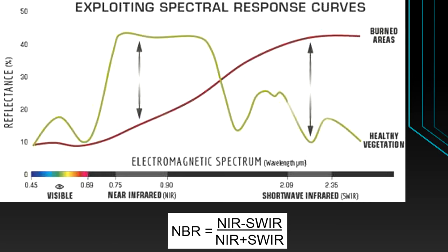The chlorophyll reflects a higher amount in the near infrared part. However, from burned areas, when the leaves are destroyed, this near infrared reflectance will come down.